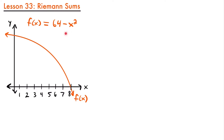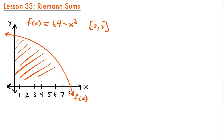Let's consider this function right here. We have f(x) = 64 minus x squared. Let's say we want to know the area under this function from 0 to 8 along our x-axis. So we're looking at the interval from 0 to 8, and the area that we're looking for would be this shaded area right here.